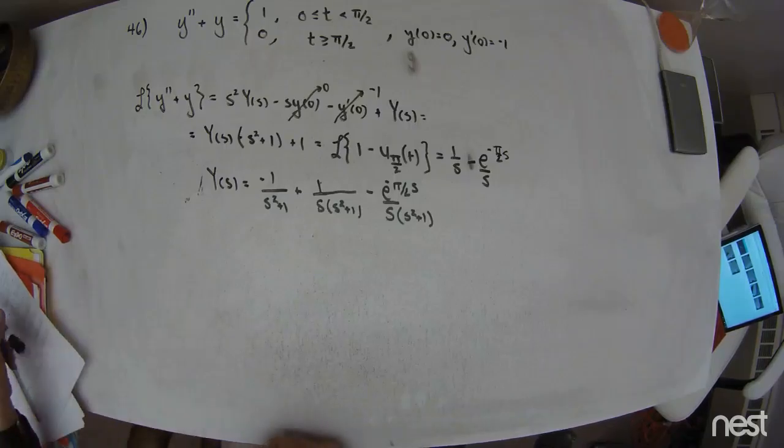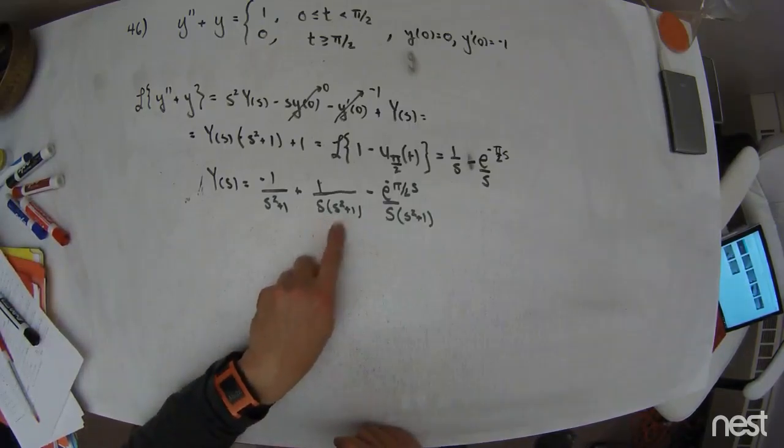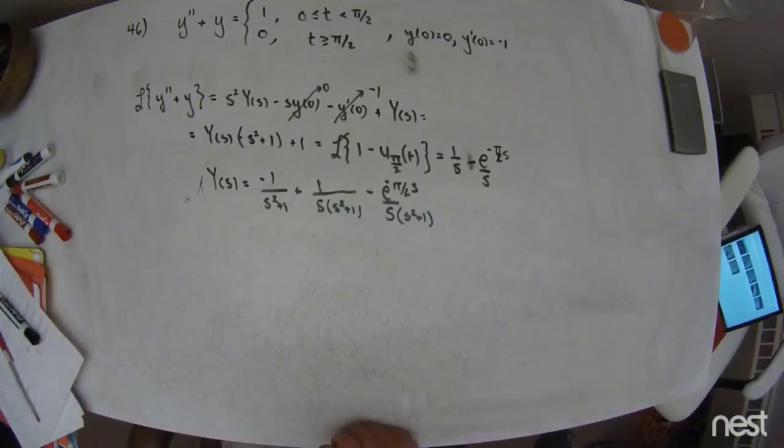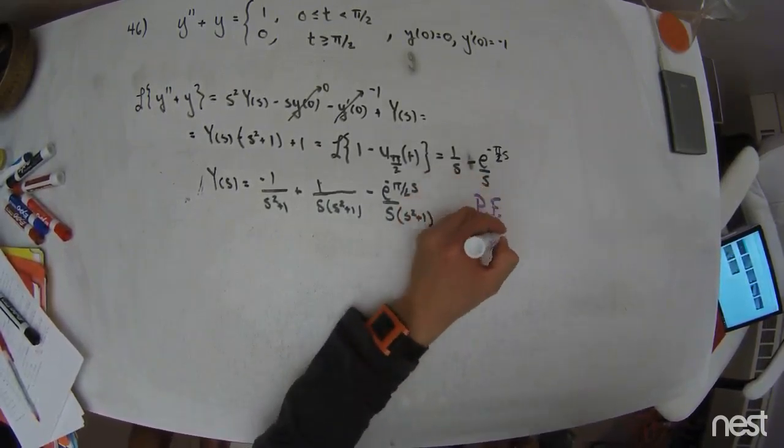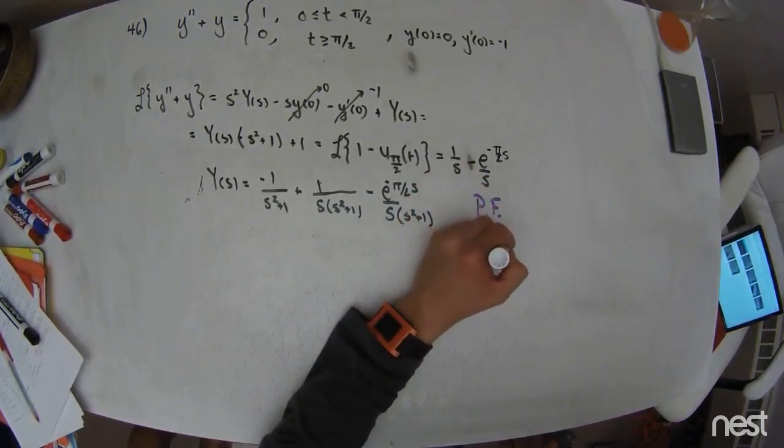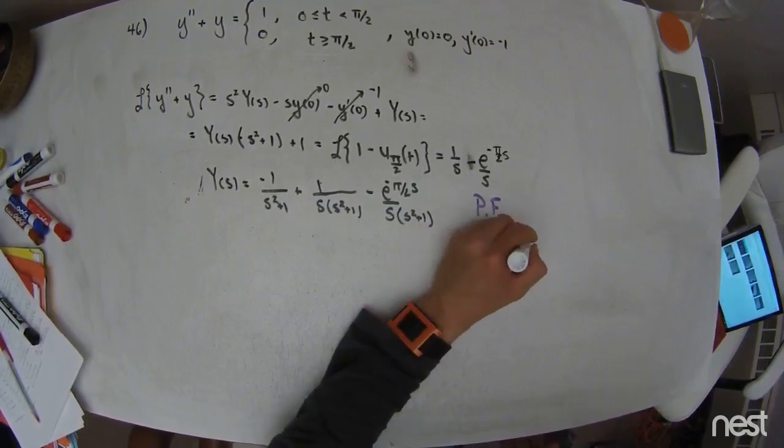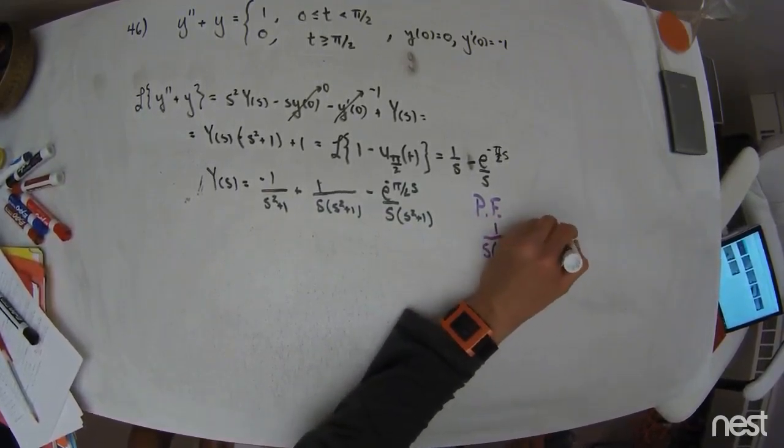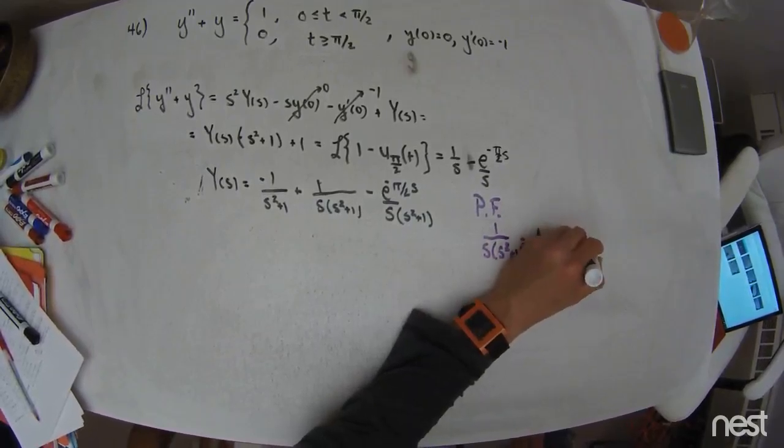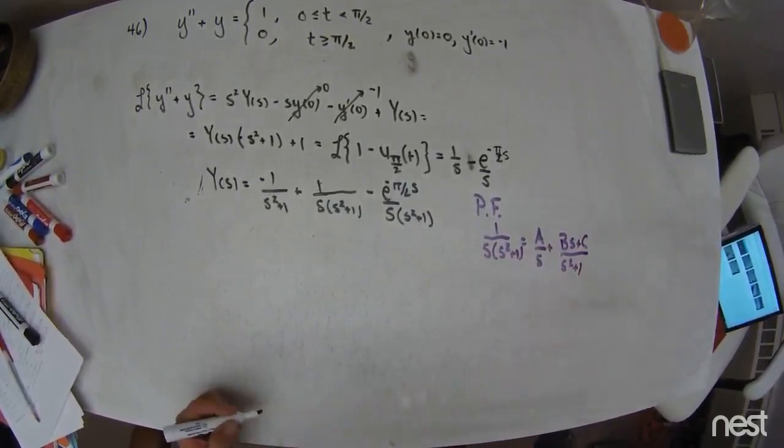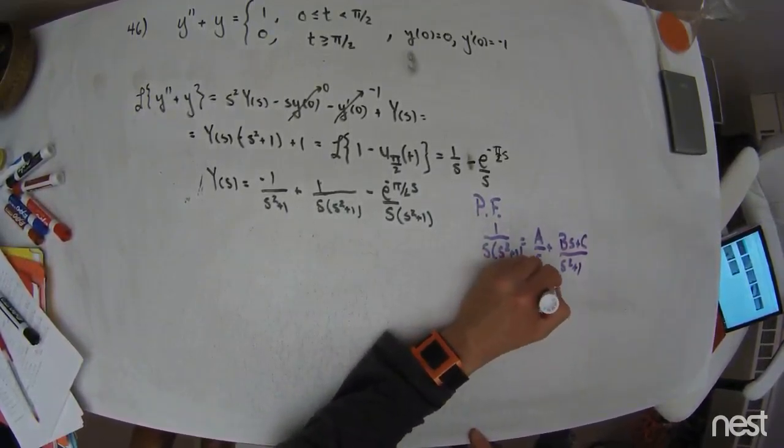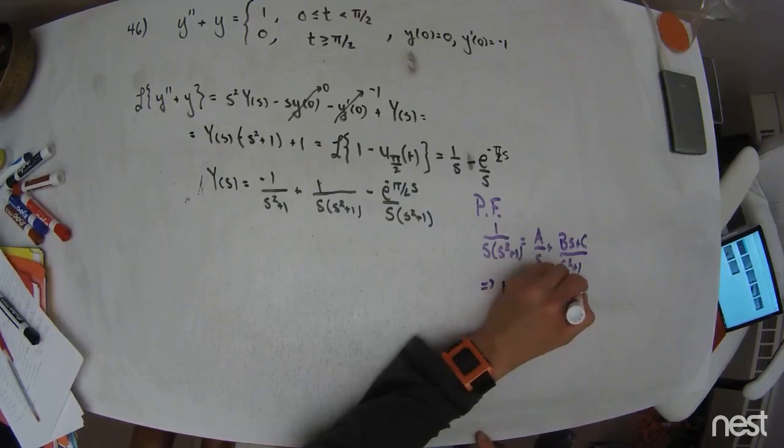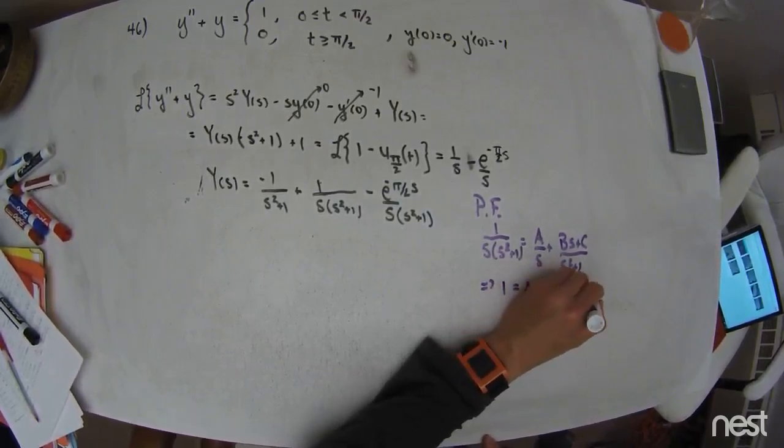There's only one major partial fraction step that I have to do here, and that's to split up this s times s plus 1 business, right? This is not supposed to be together. I need to break it apart. So when I do that, right, I'm just going to write down this partial fraction step over to the side. This is 1 over s times s squared plus 1. That becomes a over s plus b times s plus c over s squared plus 1, the irreducible quadratic. Finding a common denominator, I get 1 times a s squared plus 1 plus b s squared plus c.